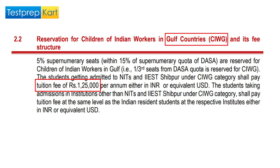Regarding reservation for children of Indian workers in Gulf countries (CIWG): 5% supernumerary seats, with 15% of the supernumerary DASA quota, are reserved for CIWG students. One-third of seats from the DASA quota is reserved for CIWG. Students admitted to NITs and IIITs under the CIWG category shall pay a tuition fee of ₹1,25,000 per annum, either in INR or equivalent USD.